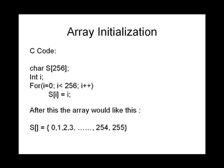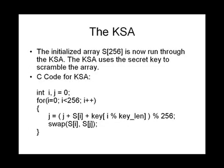After initialization we run the KSA — the Key Scheduling Algorithm — which uses the secret key to scramble this array. The code for KSA looks complicated here, but we'll get into it in the programming example where it should be much simpler. The KSA is nothing but a simple loop with two variables, i and j, used to rearrange the array.